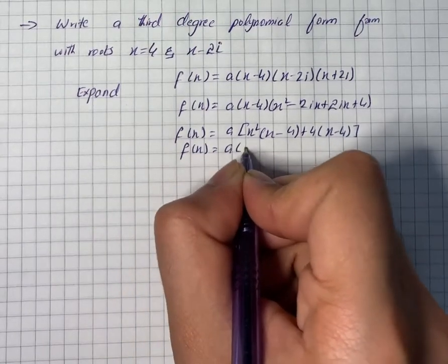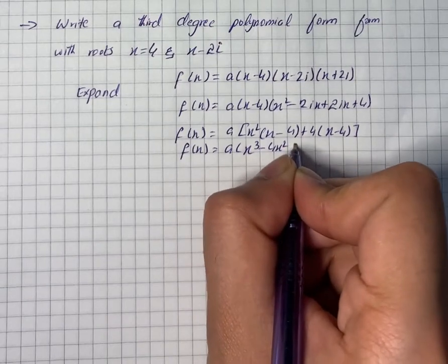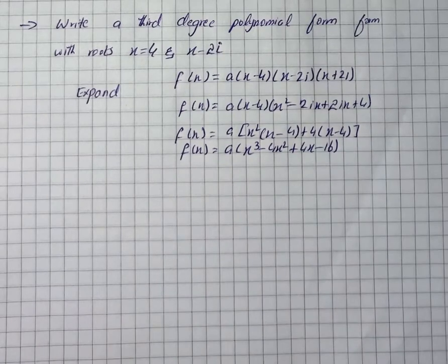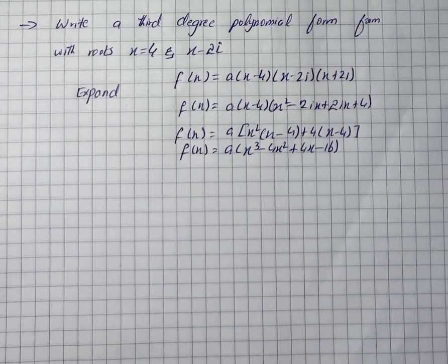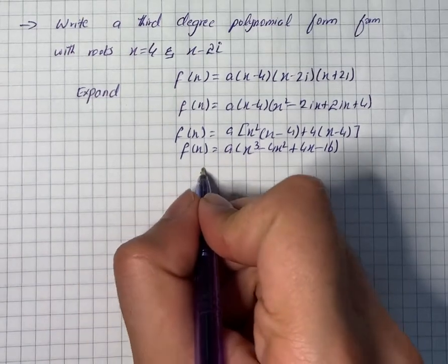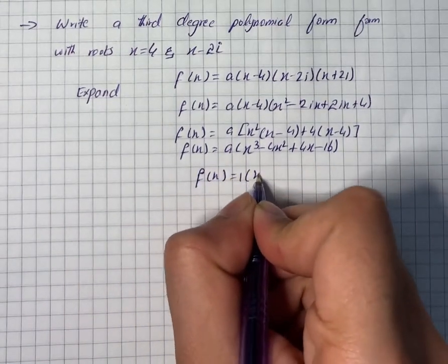For simplicity, we will use a = 1, so the possible third degree polynomial could be f(x) = 1(x³ - 4x² + 4x - 16).